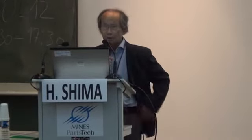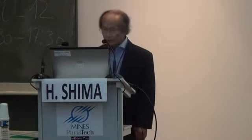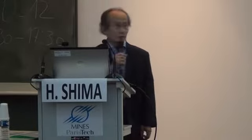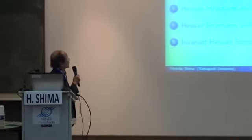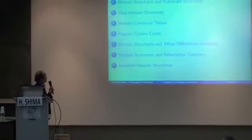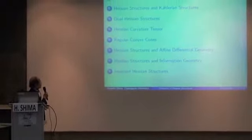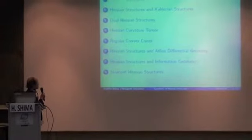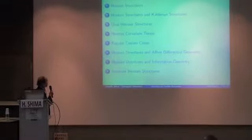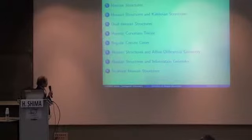In this lecture, I survey the geometry of Hessian structures — this is the universalization. The contents of my talk are: Hessian structures, Hessian structures and Kähler structures, dual Hessian structures, Hessian curvature tensors, regular Hessian structures and affine differential geometry, Hessian structures and information geometry, and invariant Hessian structures.